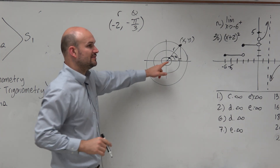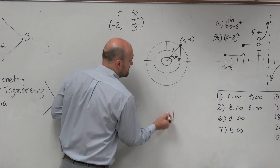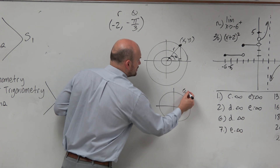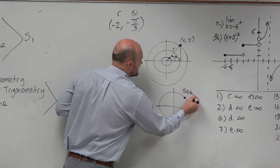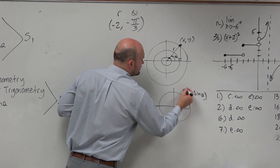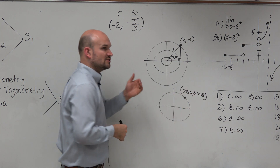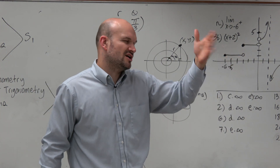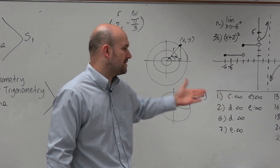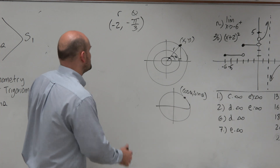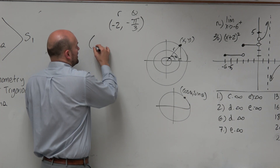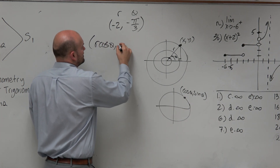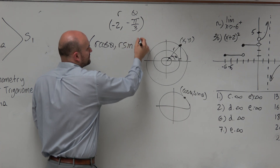Remember, the point on the unit circle is represented as cosine of theta, sine of theta. So you figure out what cosine of theta and sine of theta are, and then you just multiply by r. The general formula is just r times cosine of theta, comma r times sine of theta.